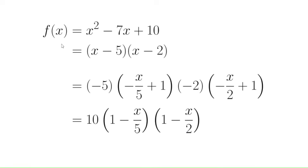So how did Euler fix this problem? Well if we take a polynomial like x² minus 7x plus 10, it factors to be (x minus 5) times (x minus 2). But what if we take a step further and take out a negative 5 out of the first factor and write it as negative 5 times (1 minus x/5), and similarly take out a negative 2 from the other factor. We can ultimately do negative 2 times negative 5 to get 10 out front, and rewrite each factor in this form.